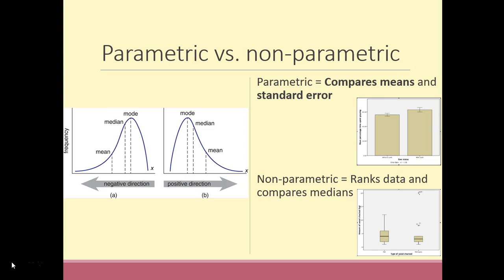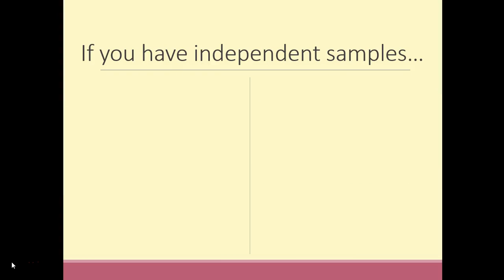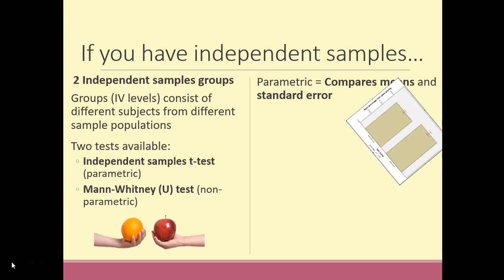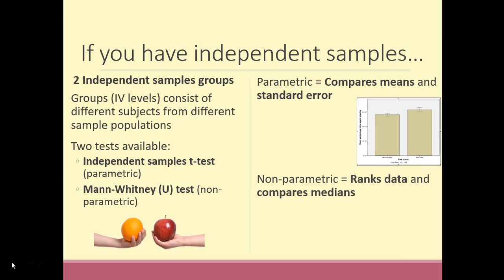That covers related samples tests. Now let's look at independent samples tests. If you've ascertained that you have independent samples data, you also have a parametric and a non-parametric option. The parametric test is an independent samples t-test and the non-parametric test is the Mann-Whitney U test. The same principles apply: the parametric test compares means and standard error, while the non-parametric test ranks the data and compares medians.